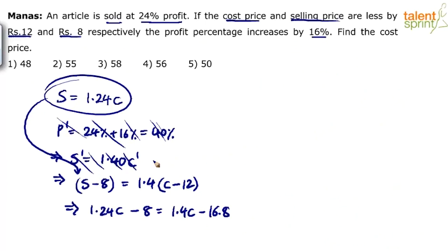You are not going to get extra marks for writing S' equals to 140 percentage of C'. You should directly write S minus 8 equals to 140 percentage of C minus 12. Now solve for this, what do we get?